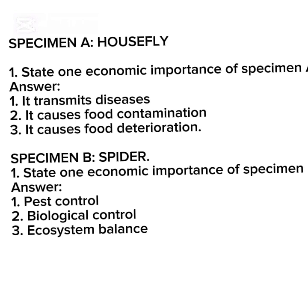Specimen B is a spider. You may be asked to state one economic importance of Specimen B. Number one is pest control, biological control, and ecosystem balance.